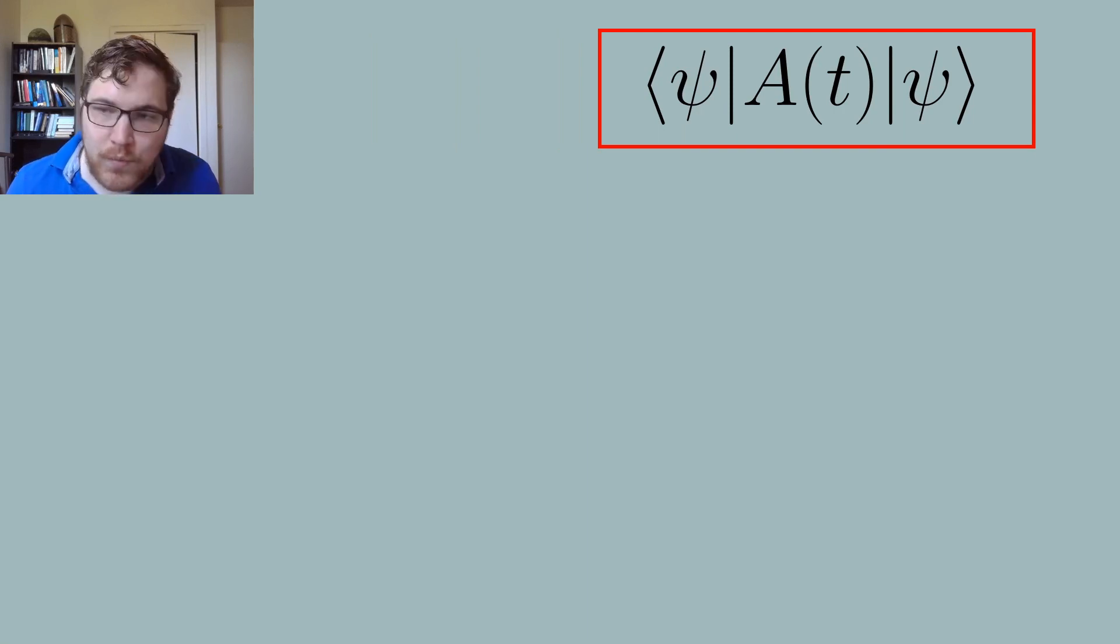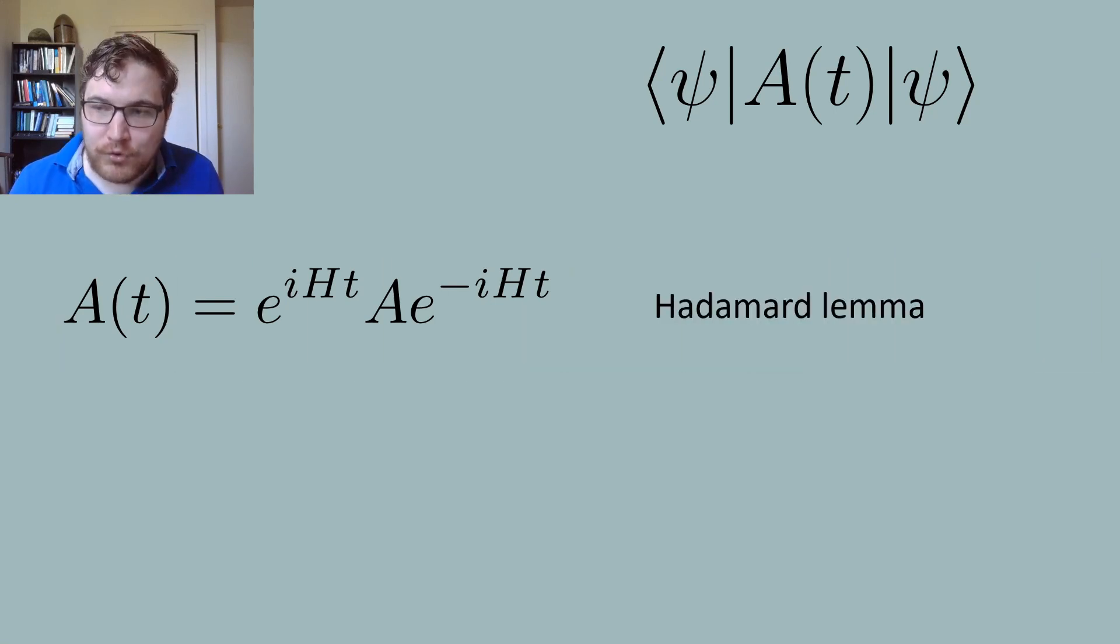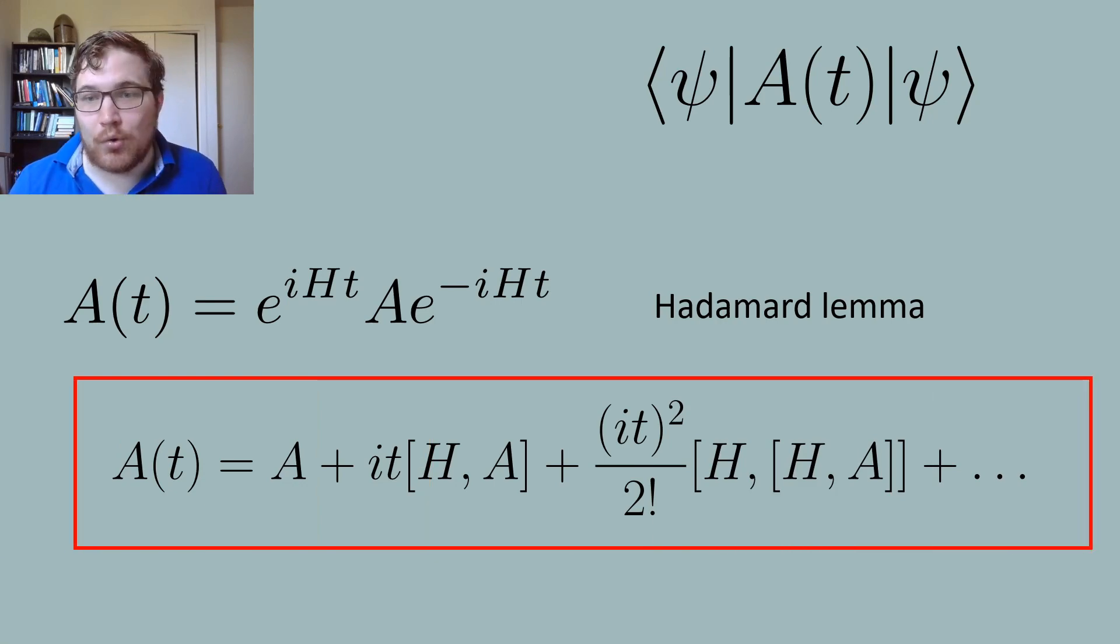To see why this happens, we can take a more mathematical approach. Let's proceed in the Heisenberg picture with some state ψ, which we might say is either ψ₁ or ψ₂ from before. We are interested in understanding the observable as a function of time, which can be written in terms of the time evolution operator as seen here. To investigate this further, we can look at the Hadamard lemma, which tells us that the evolution of the observable A can be rewritten as the following expression, which we write out to second order, but it's sort of easy to see what the third, fourth, etc. terms would be.